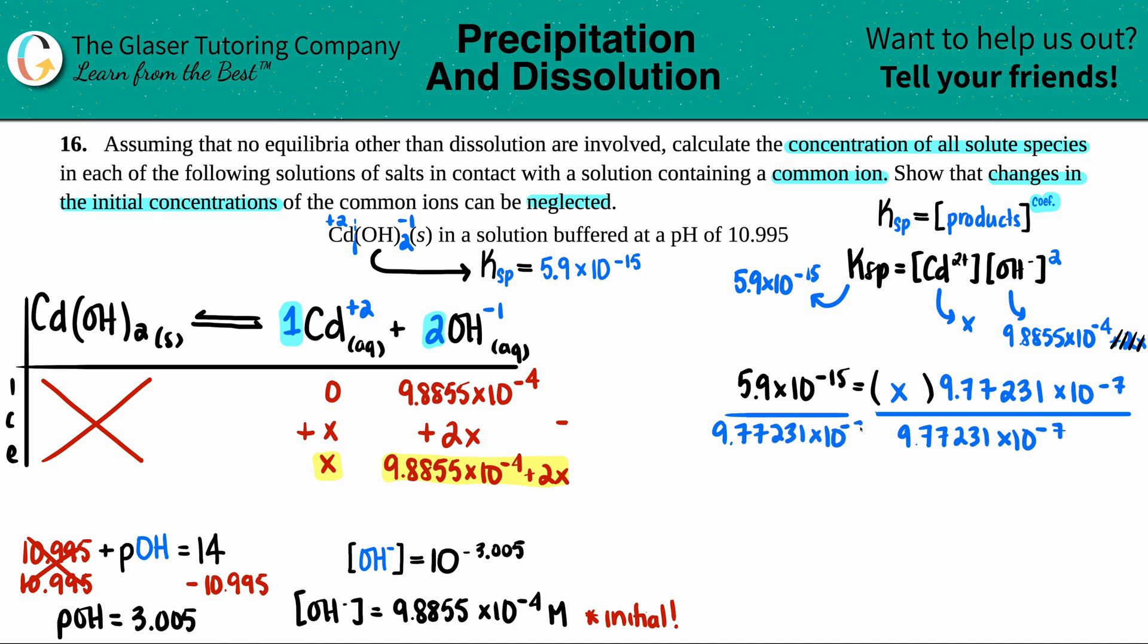So 5.9 times 10 to the negative 15th divided by 9.77231 times 10 to the negative 7th, and I guess five sig figs, does anybody care? No. 6.0375 times 10 to the negative 9th, and that's molarity. But first let's do the 5% rule.